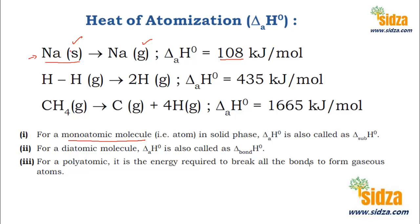For a diatomic homonuclear molecule like H₂, the heat of atomization is 435 kilojoules — the heat required to convert this H₂ molecule into gaseous hydrogen atoms. This is also the bond energy, because you have to break the bond to convert it into the gaseous atomic state. So for a diatomic molecule like H₂, heat of atomization is also called the bond energy.